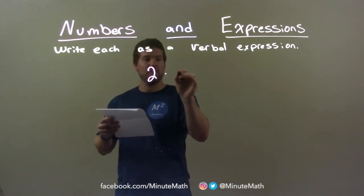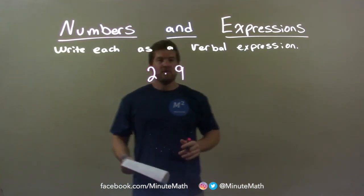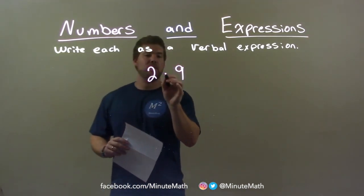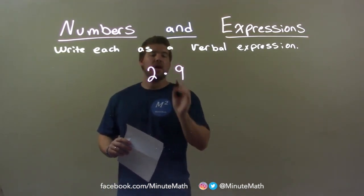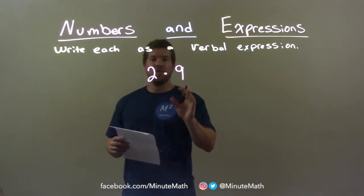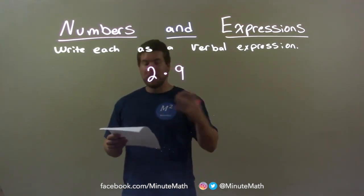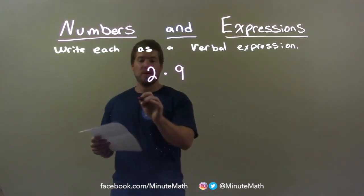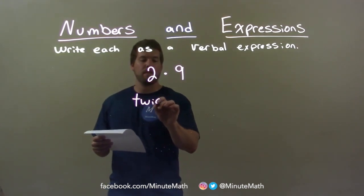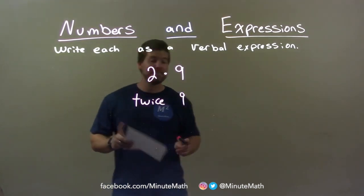2 times 9. There are many ways to write 2 times 9, but the way I'm going to choose here is: we take 9 and we have twice that. So we're twice 9. So here we're going to have twice 9.